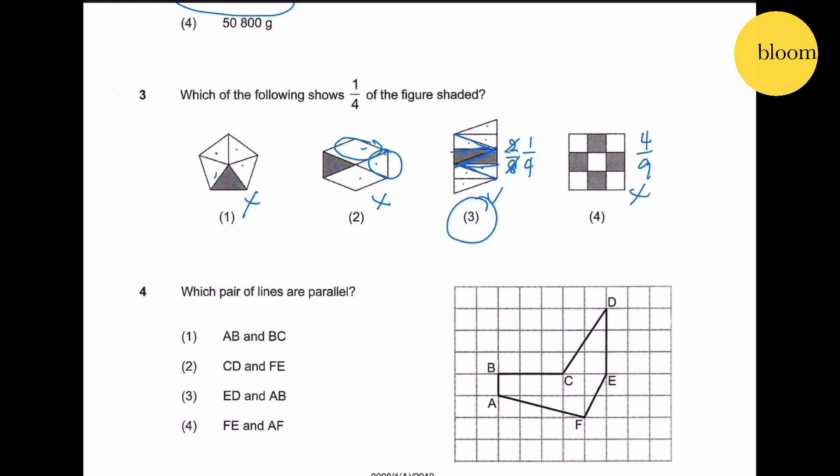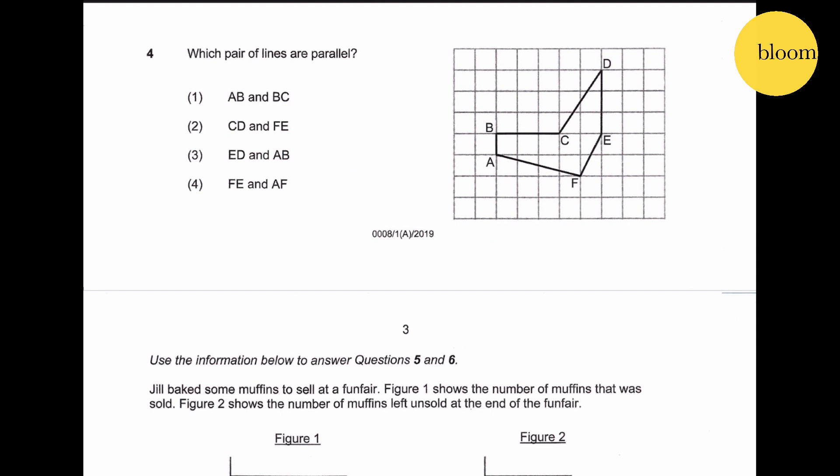Question number four: which pair of lines are parallel? AB is parallel to DE. This is the answer.